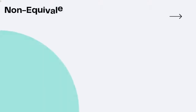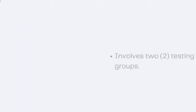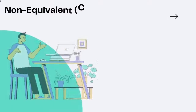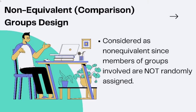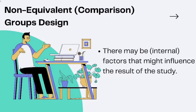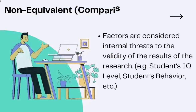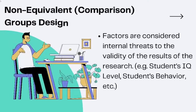The first one is the non-equivalent comparison groups design, which involves two testing groups. It is considered as non-equivalent since members of the groups involved are not randomly assigned. There may be factors that might influence the result of the study, and these factors are considered internal threats to the validity of the results of the research.